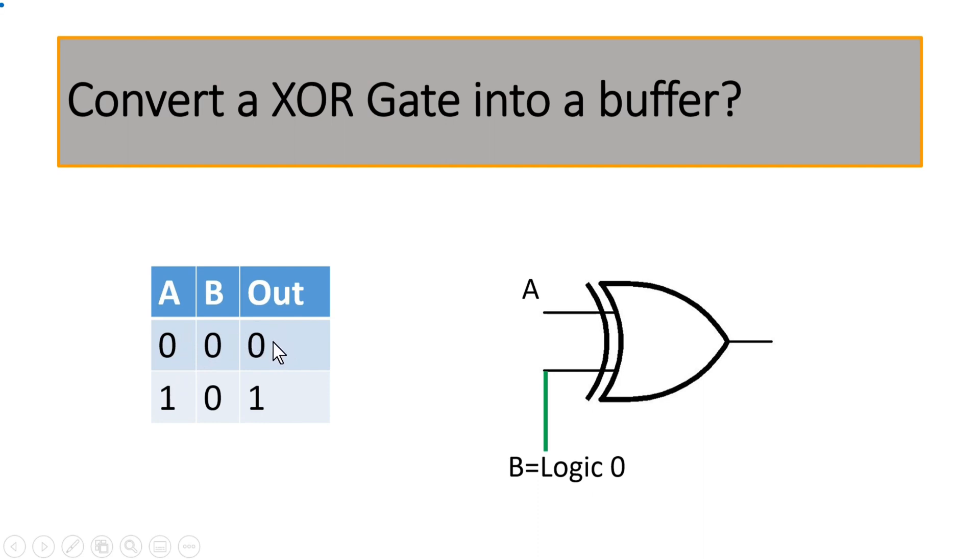When A is 1, output is again 1. So output is always equal to the input A. So that way we can say that the circuitry is acting as a buffer.